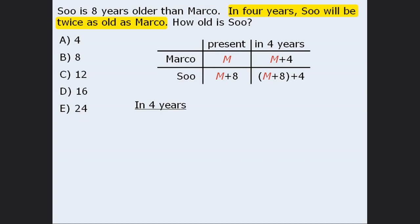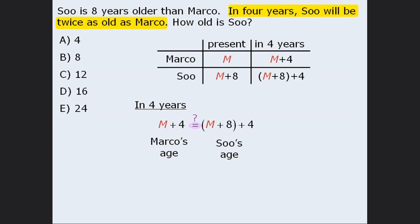Now that we have completed our table, we can examine the information about their future ages. In 4 years, Marco's age will be M plus 4, and Sue's age will be M plus 8 plus 4. Our goal is to create an equation. The question tells us that in 4 years, Sue's age will be twice that of Marco's age. So to make these two quantities equal and create an equation, we take Marco's age and multiply it by 2, giving us an equation we can solve for M.